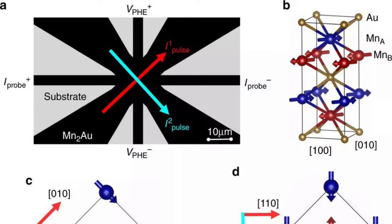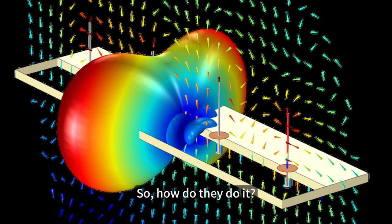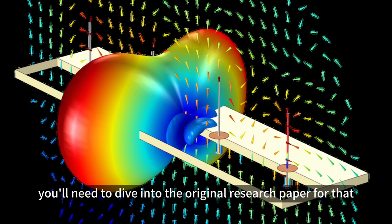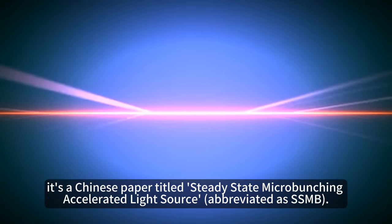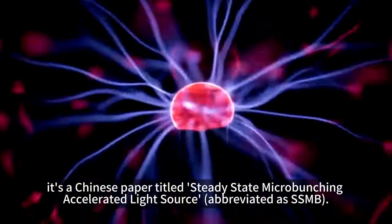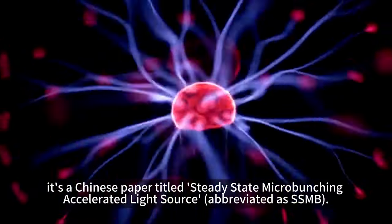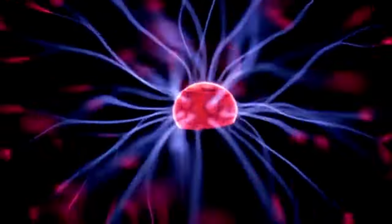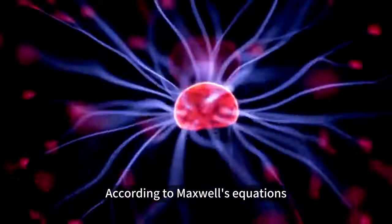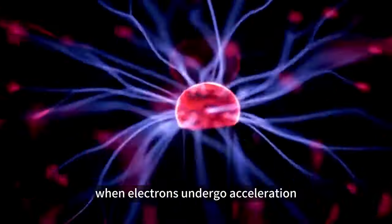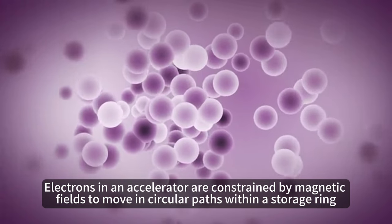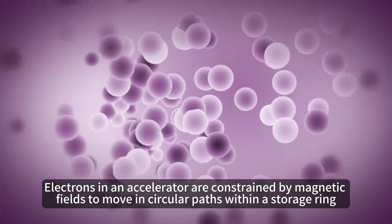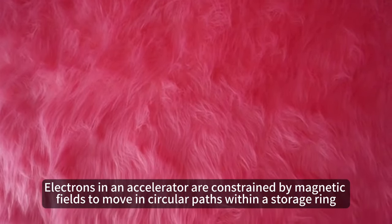So how do they do it? Well, you'll need to dive into the original research paper for that. Fortunately, it's a Chinese paper titled 'Steady-State Microbunching Accelerated Light Source,' abbreviated as SSMB. According to Maxwell's equations, when electrons undergo acceleration they emit electromagnetic waves. Electrons in an accelerator are constrained by magnetic fields to move in circular paths within a storage ring.